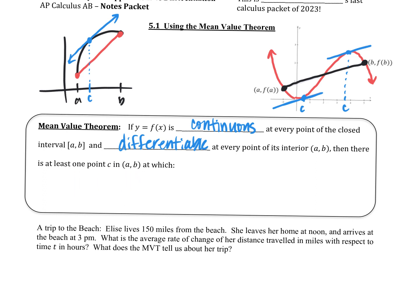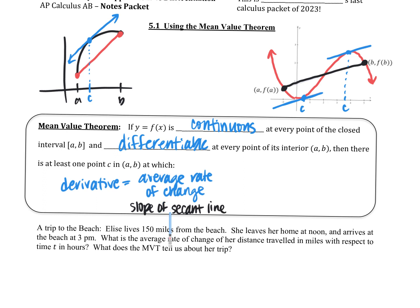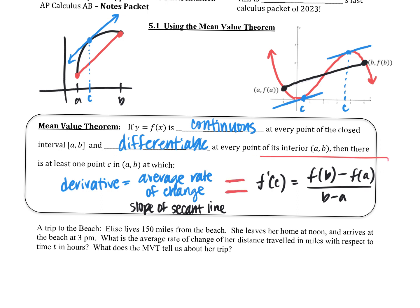They're saying the derivative will equal the average rate of change. The average rate of change is the same as the slope of the secant line — whichever one you like to write on the right-hand side, these mean the same thing. The average is just change in y over change in x. So f prime of c equals the average rate of change — that's just slope, change in y over change in x. This is the fancy notation of the mean value theorem.